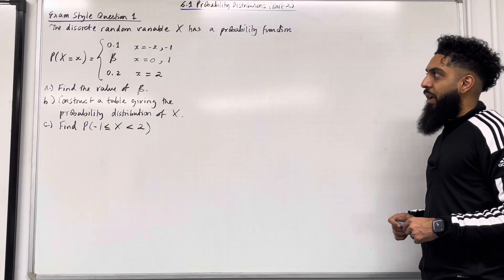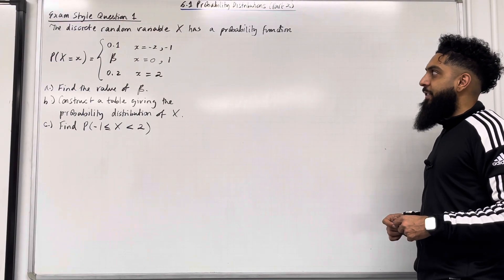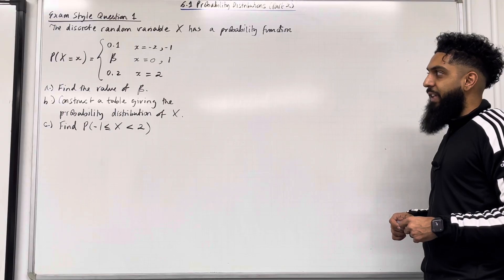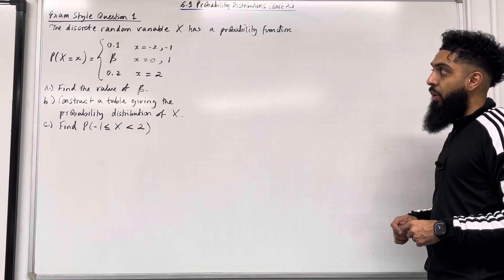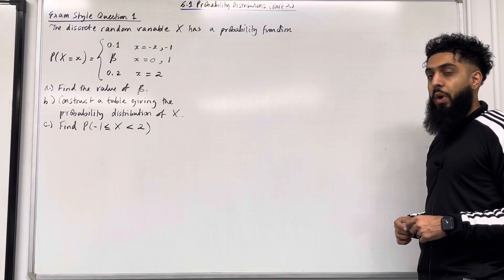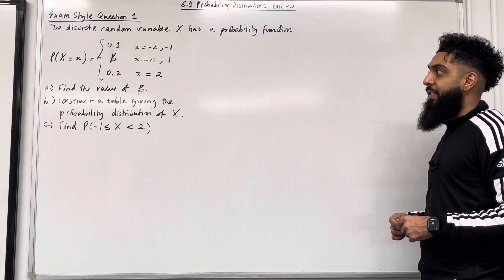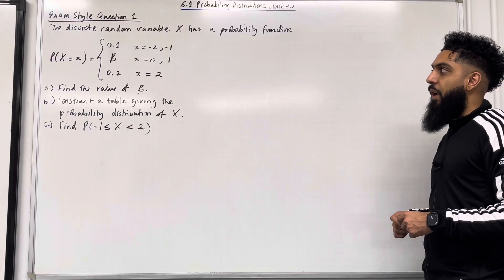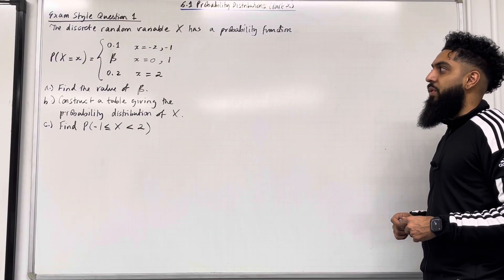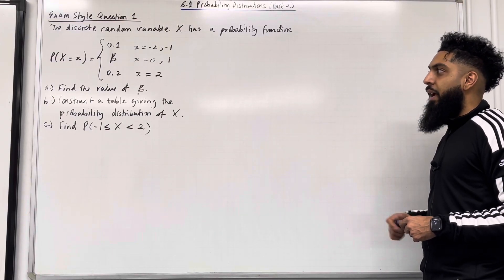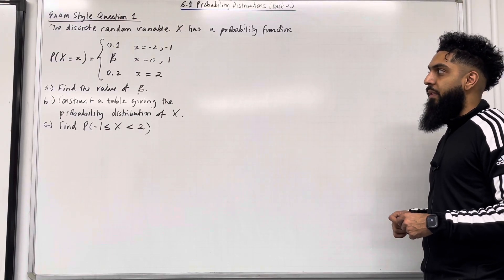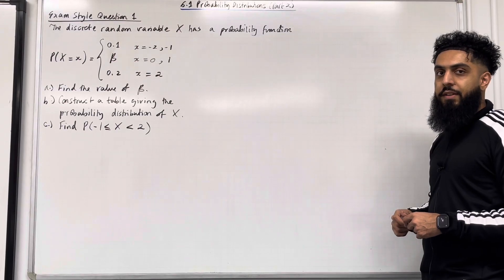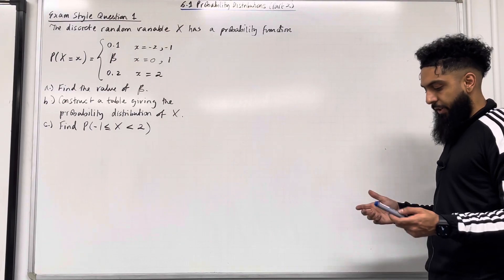The discrete random variable X has a probability function. P(X = x) is equal to 0.1 if x is equal to minus 2 or minus 1, beta if x is equal to 0 or 1, and 0.2 if x is equal to 2. Part A: find the value of beta.